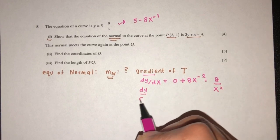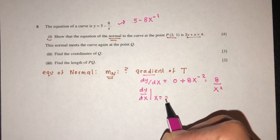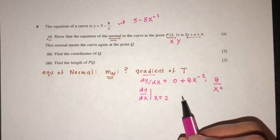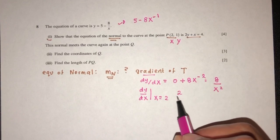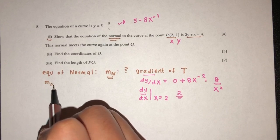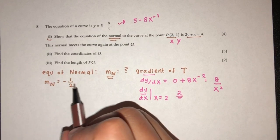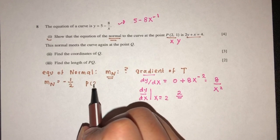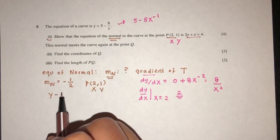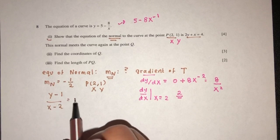Now dy/dx at x equal to 2 — the x and y values — will be 8 over 4, which is 2. Which means the gradient of the normal has to be minus half. And the passing point is (2, 1) — that is the x value and y value. So (y minus 1) over (x minus 2) equals minus half.